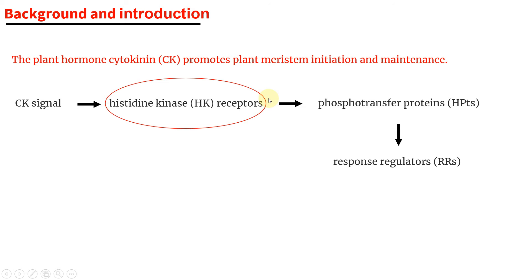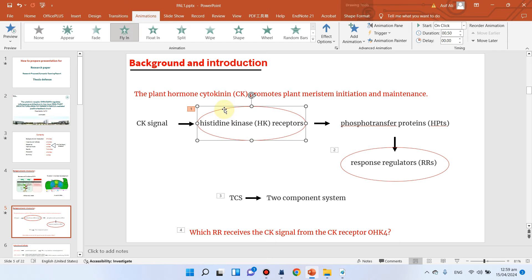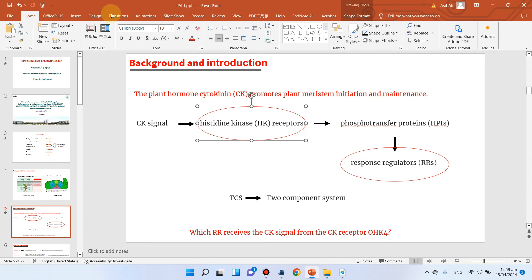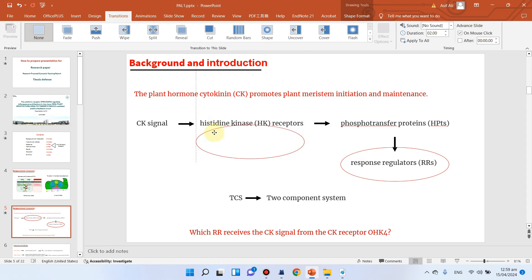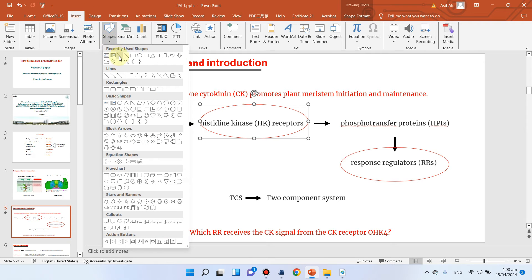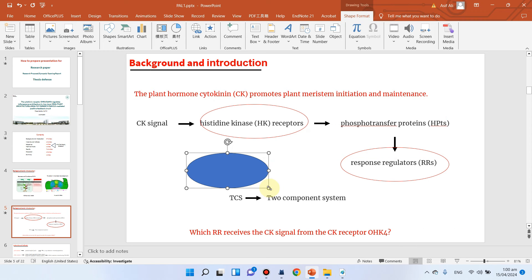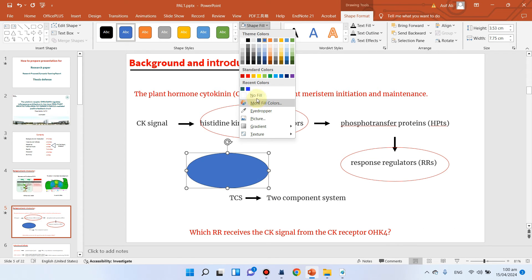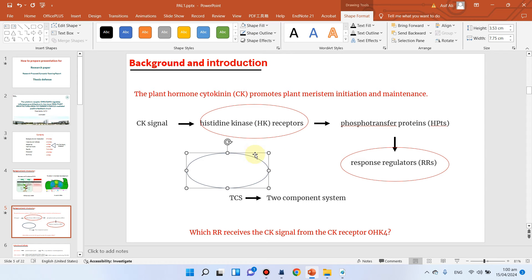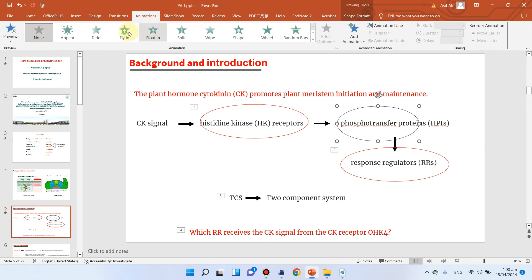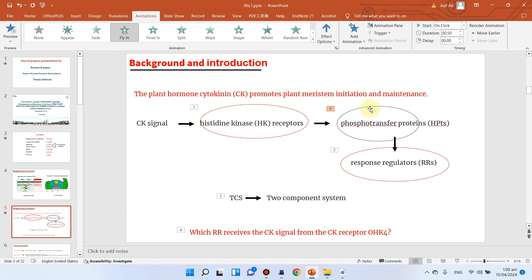You can also add transitions. To add them, go to the Transitions tab. To add a circle highlight shape, go to Insert, choose an oval shape, paste it, then go to Shape Fill and choose No Fill. To add slide transitions, go to Animations and apply a transition. In this case I have already added one, so there is no need to add another.